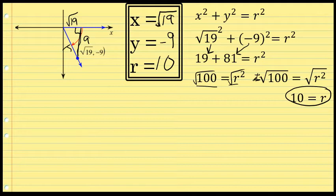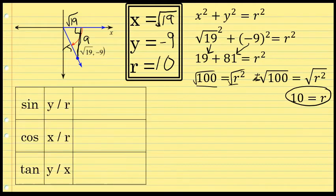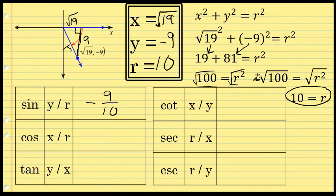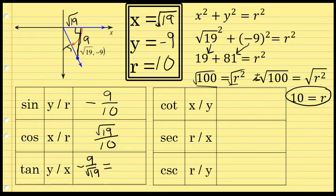Now that x = √19, y = -9, and r = 10, finding the six trig functions is straightforward. Sine = y/r = -9/10. Cosine = x/r = √19/10 (irrational). Tangent = y/x = -9/√19, which we rationalize by multiplying numerator and denominator by √19, giving -9√19/19.